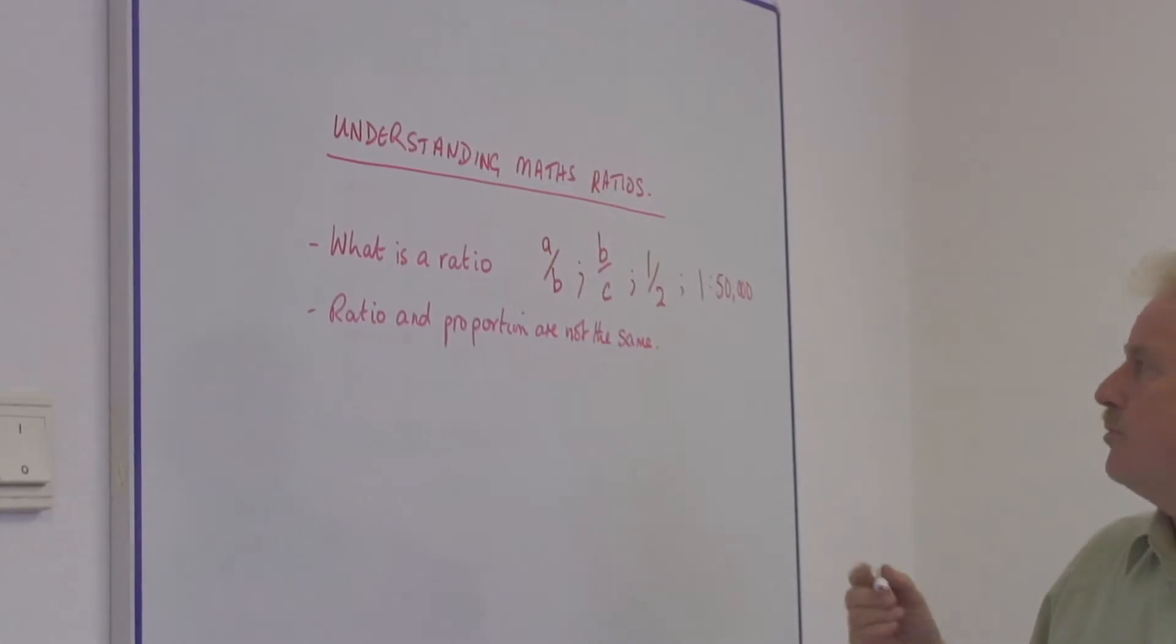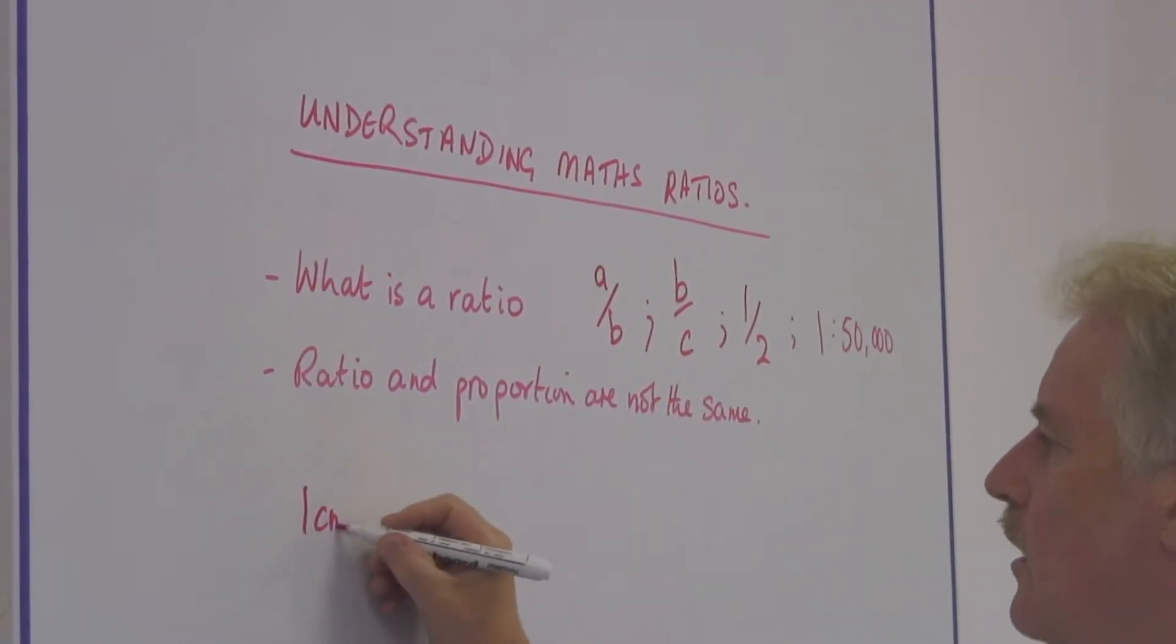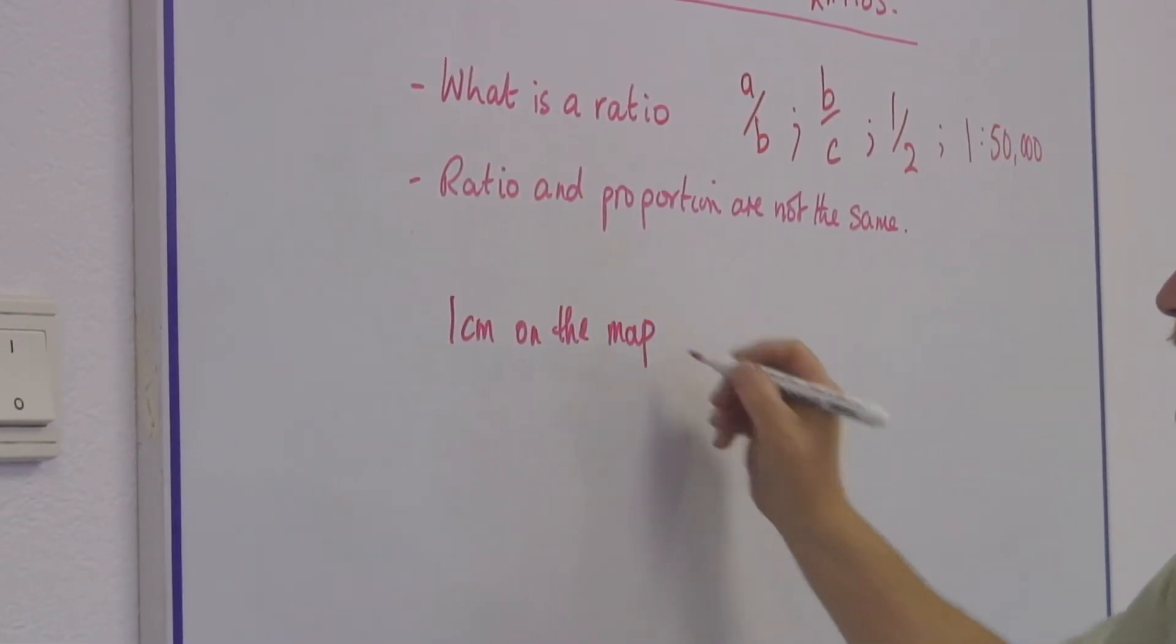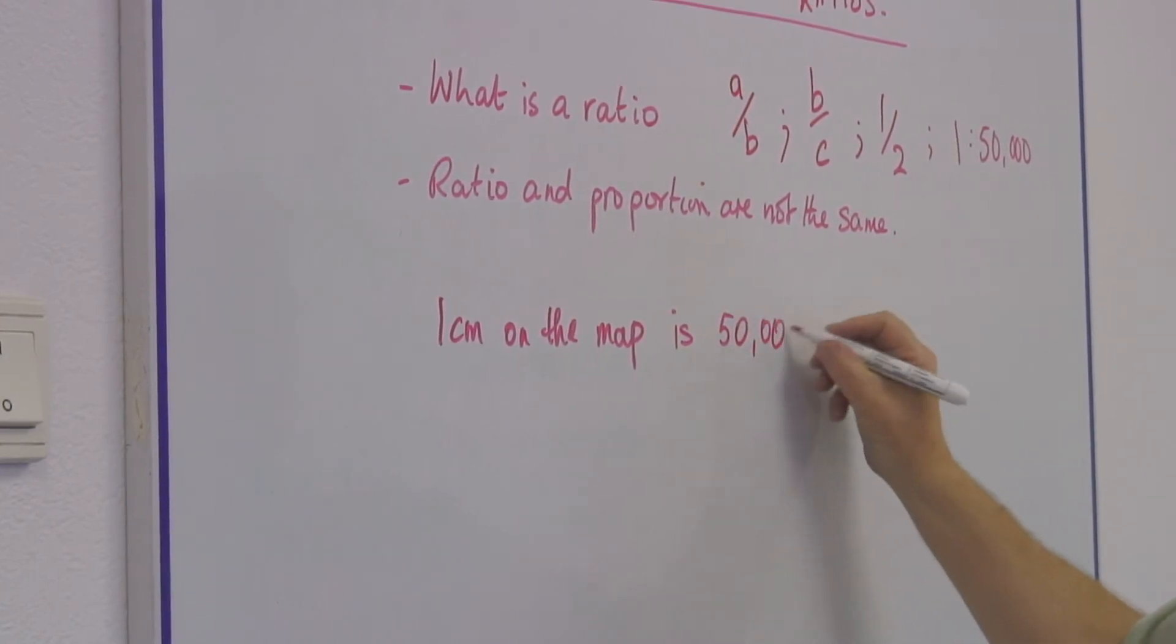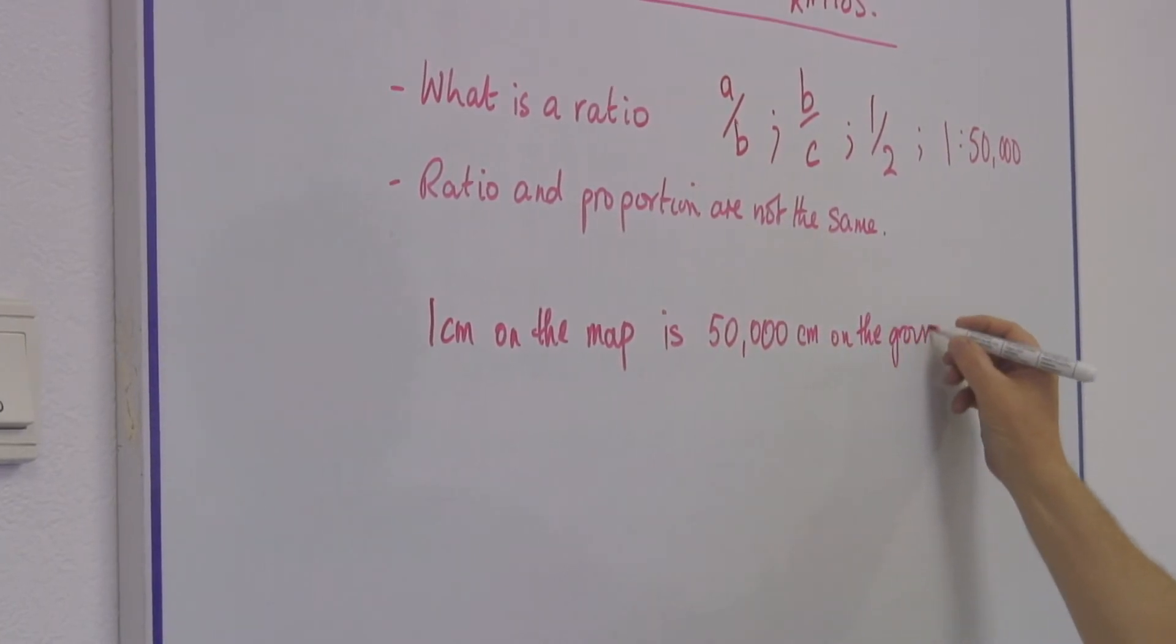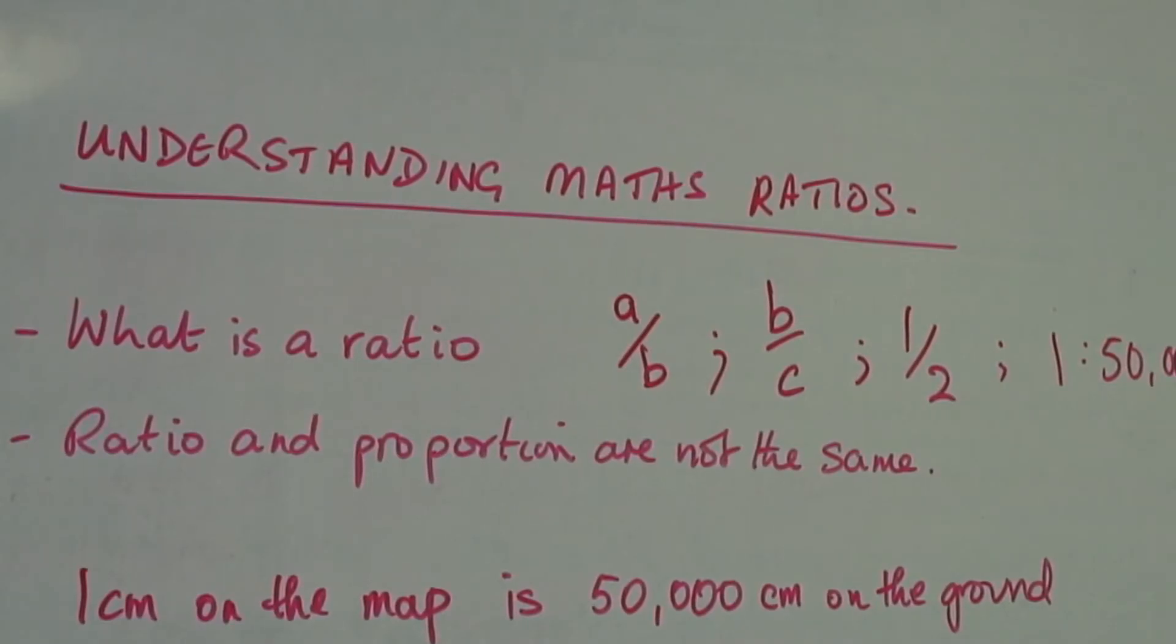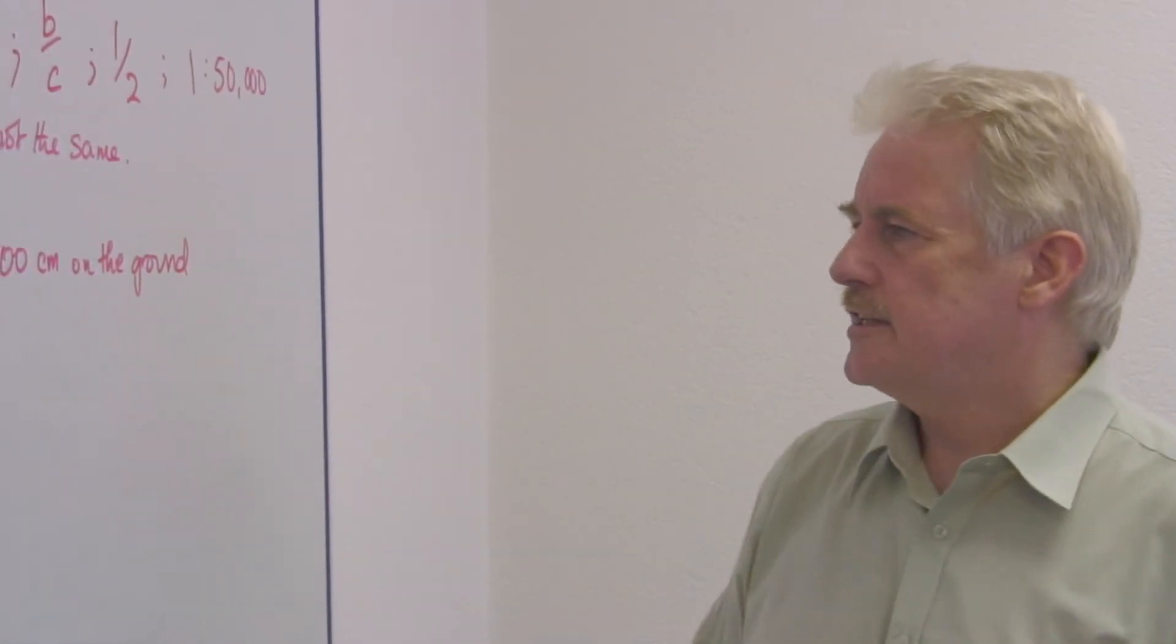So for example, on a map, if it's 1 centimeter on the map is 50,000 centimeters on the ground. And this is very important, particularly nowadays. People use maps a lot, particularly road maps, so you can tell how far it is.